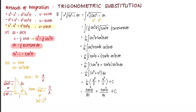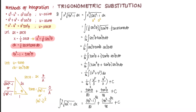Replacing tangent theta in terms of x, we can write the answer as: (4x squared minus 1) raised to the power of 5 halves over 80, plus (4x squared minus 1) raised to the power of 3 halves over 48, plus C. This is our answer, but we can also write a completely factored form.